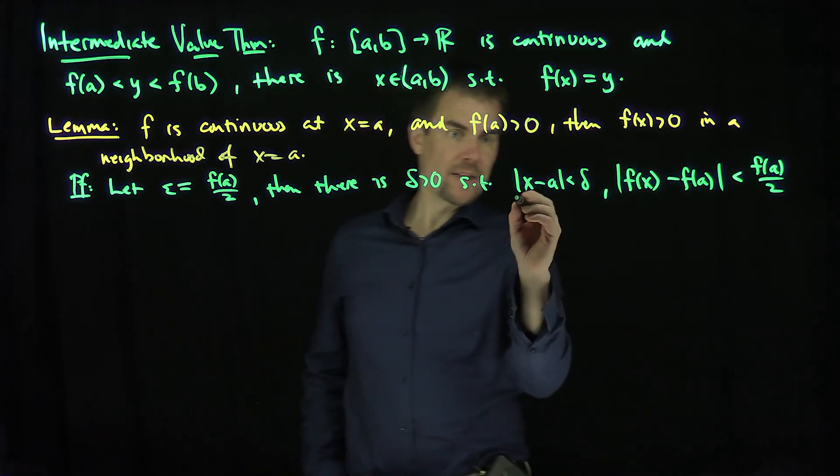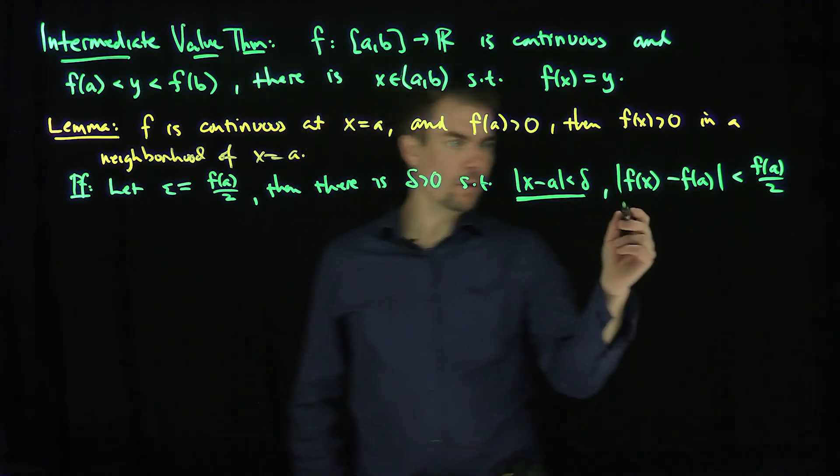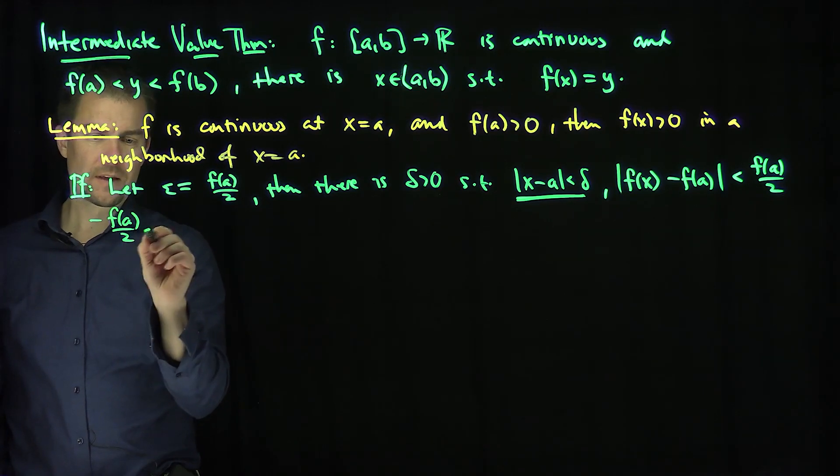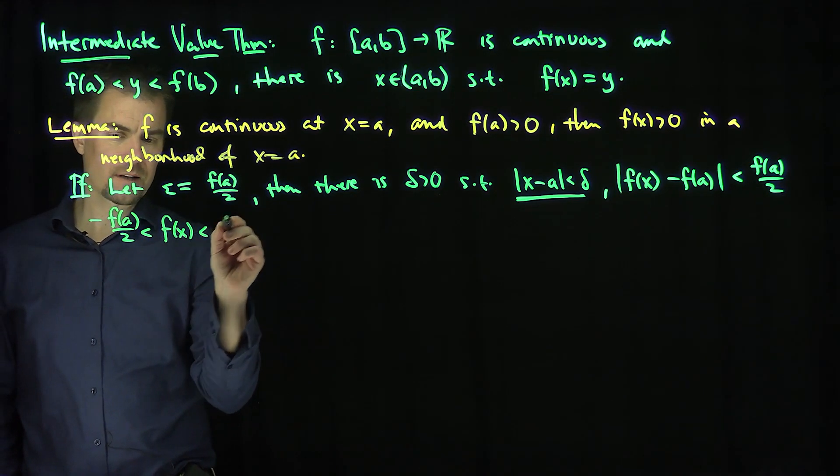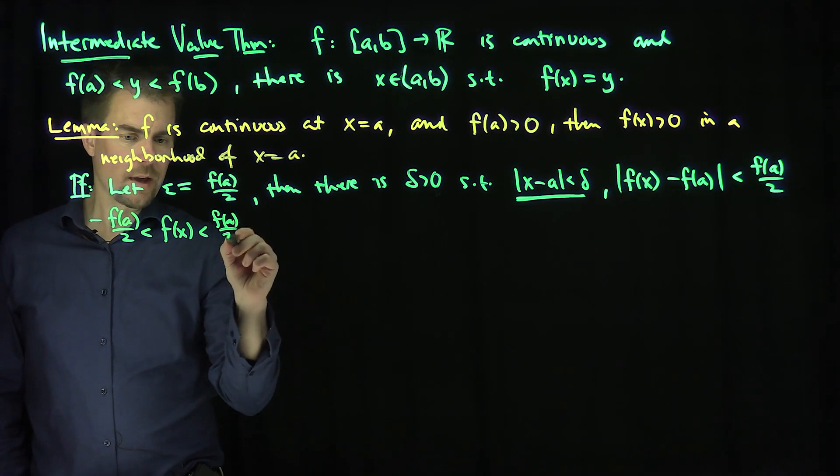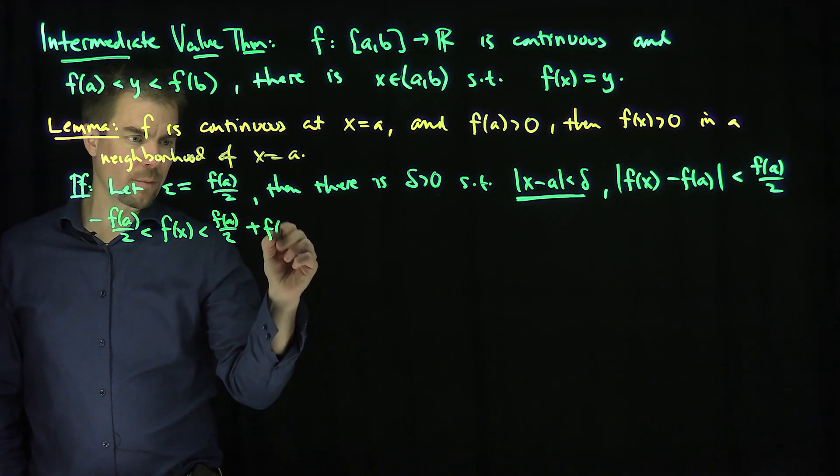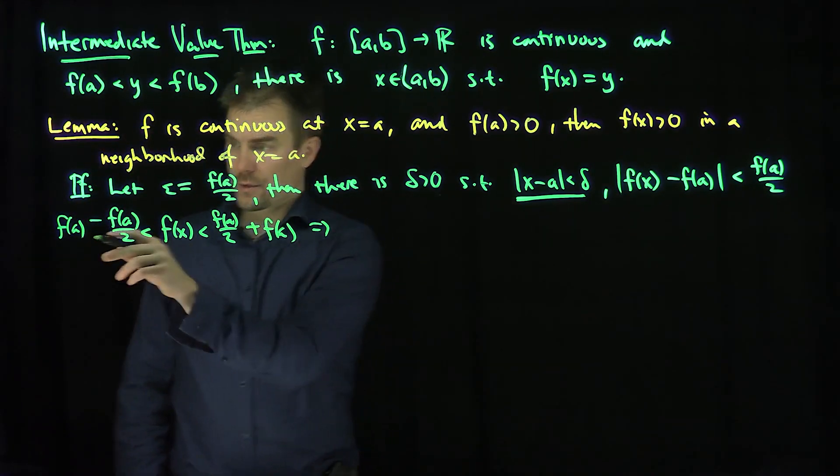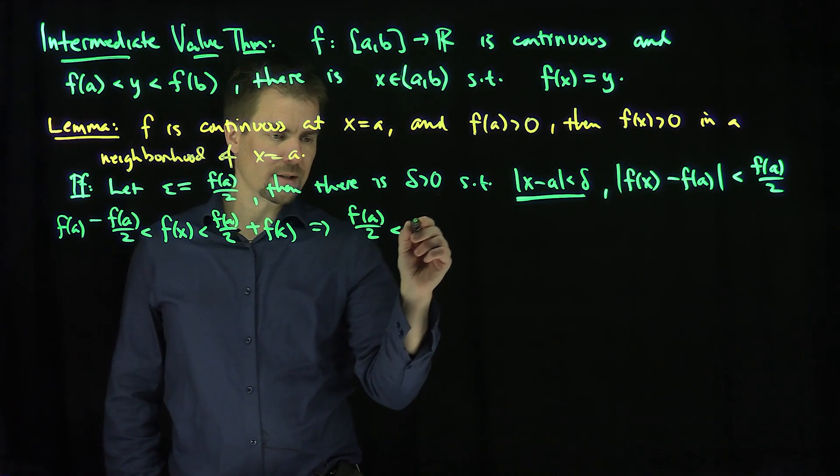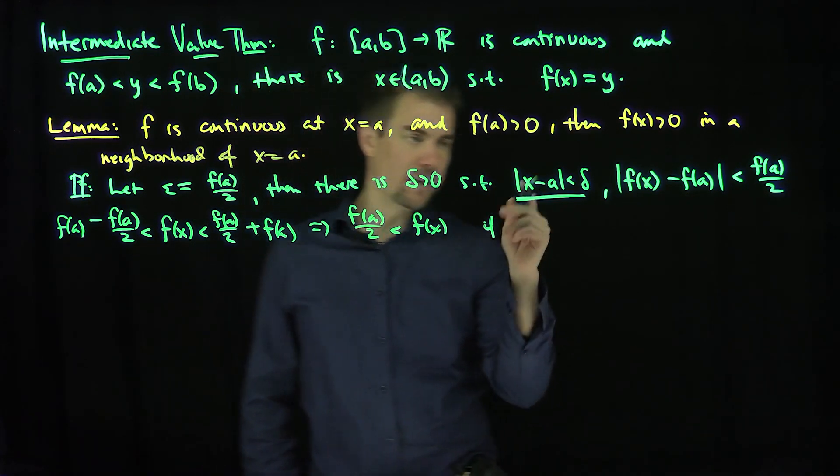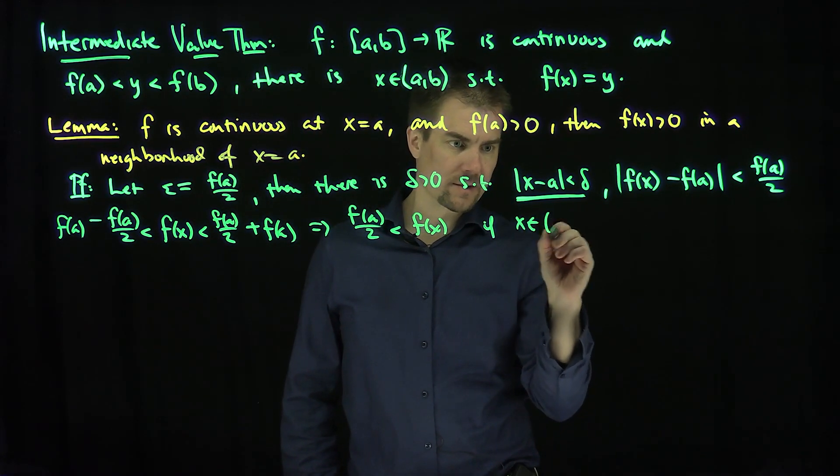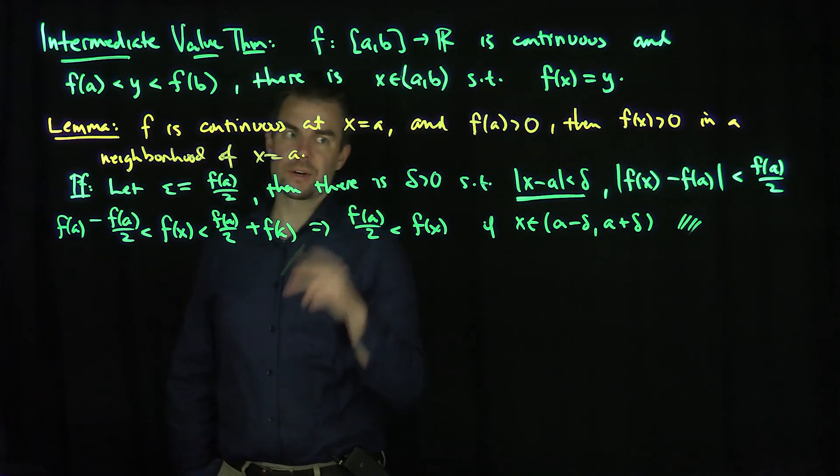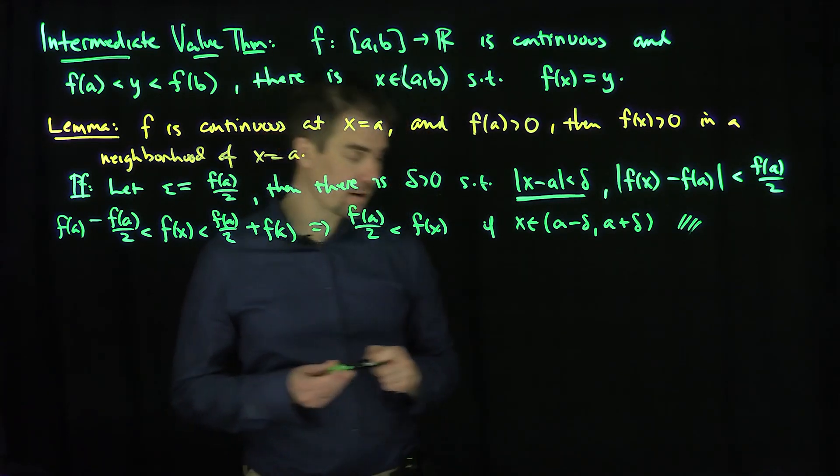If we unwind this definition, this says that negative f(a)/2 is less than f(x) minus f(a) is less than f(a)/2. So f(a)/2 is less than f(x) if x lies in the interval from a minus delta to a plus delta. That's the neighborhood of a on which the function remains positive.